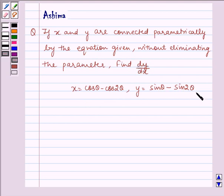Now let's proceed to the solution. The given equations are x = cos θ - cos 2θ and y = sin θ - sin 2θ.